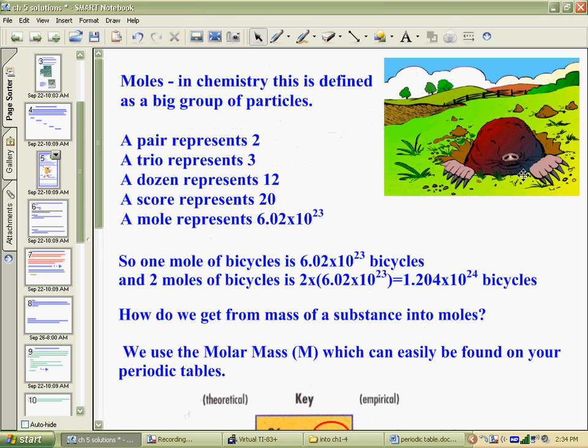A mole in chemistry is a huge group of particles. When you talk about a pair, a pair of particles is two. A trio would be three, a quartet would be four, five might be a pentad. A dozen, everyone knows a dozen is 12. Not many people may be aware that a score would be 20. All of that, though, doesn't help us figure out, but in chemistry, the mole is 6.02 times 10 to the 23.